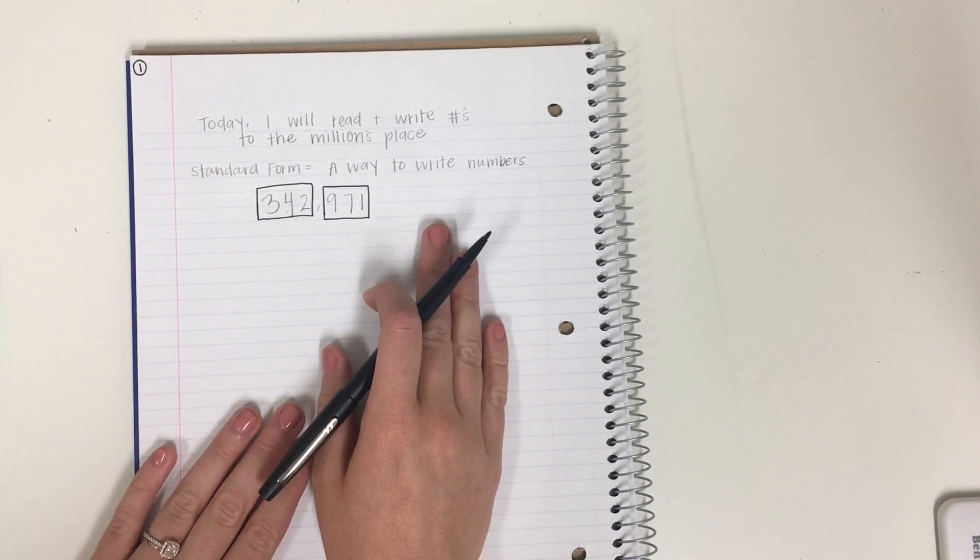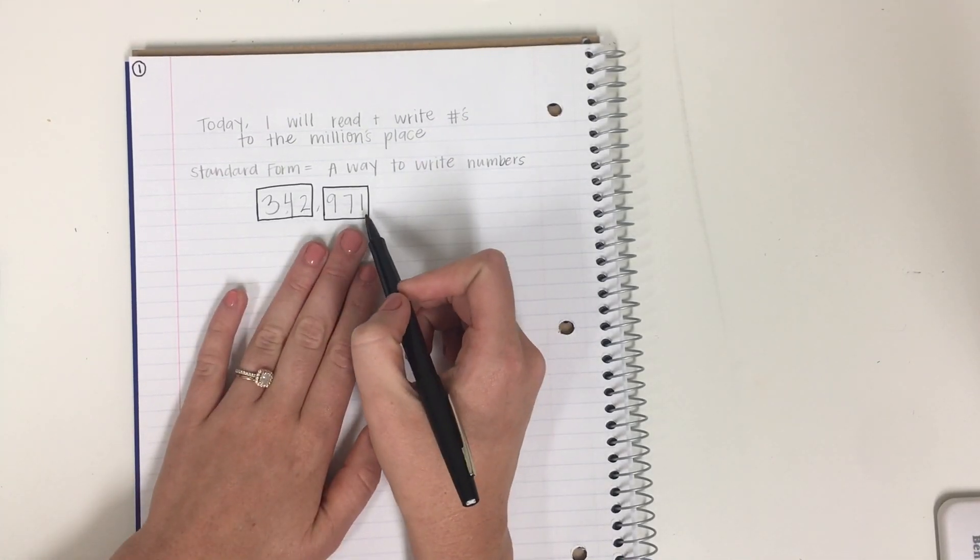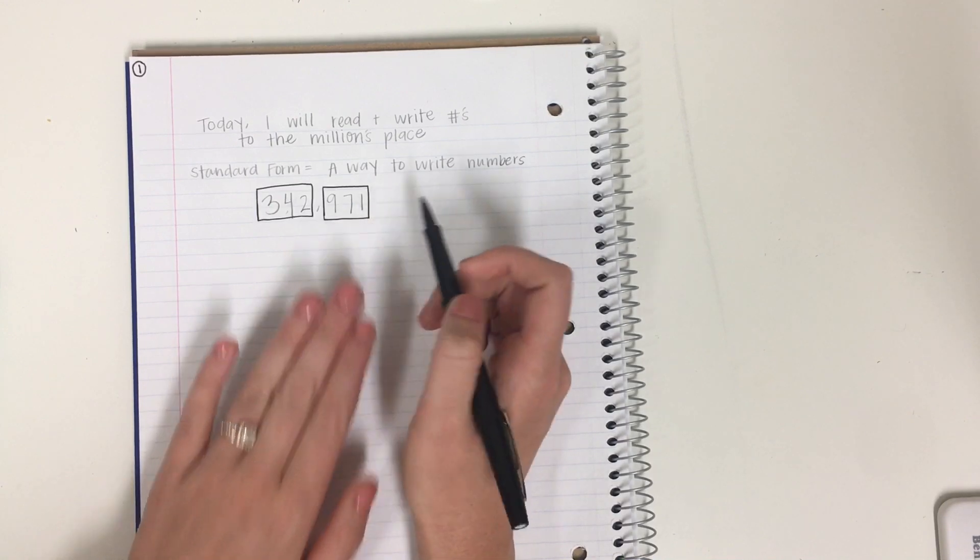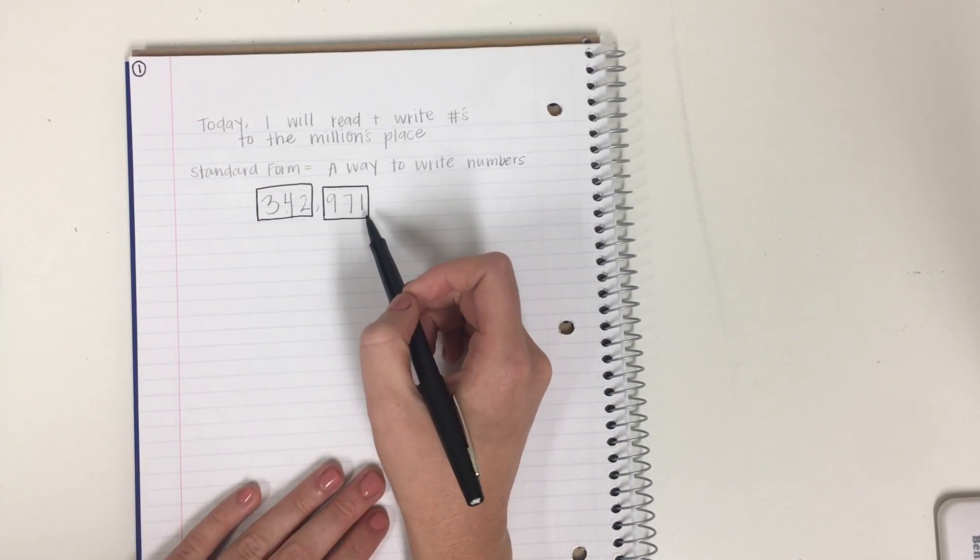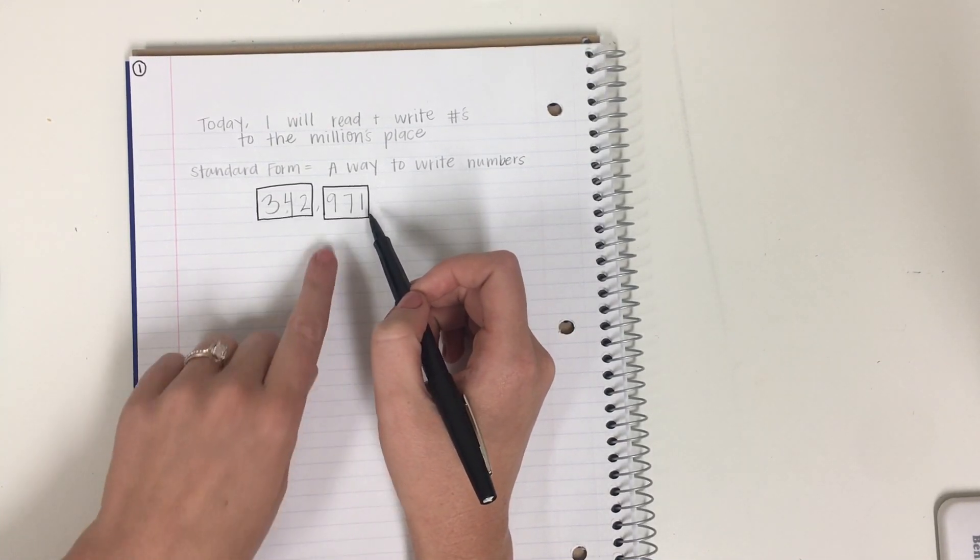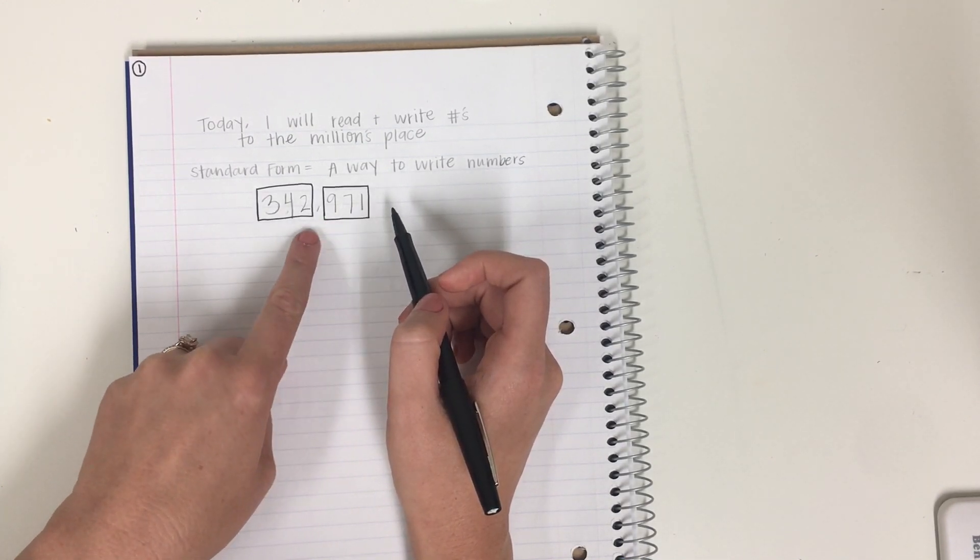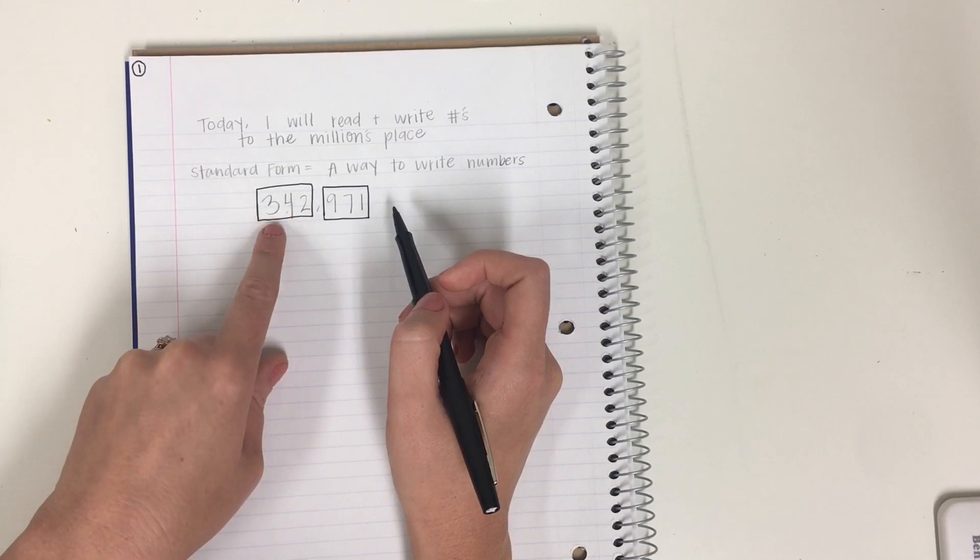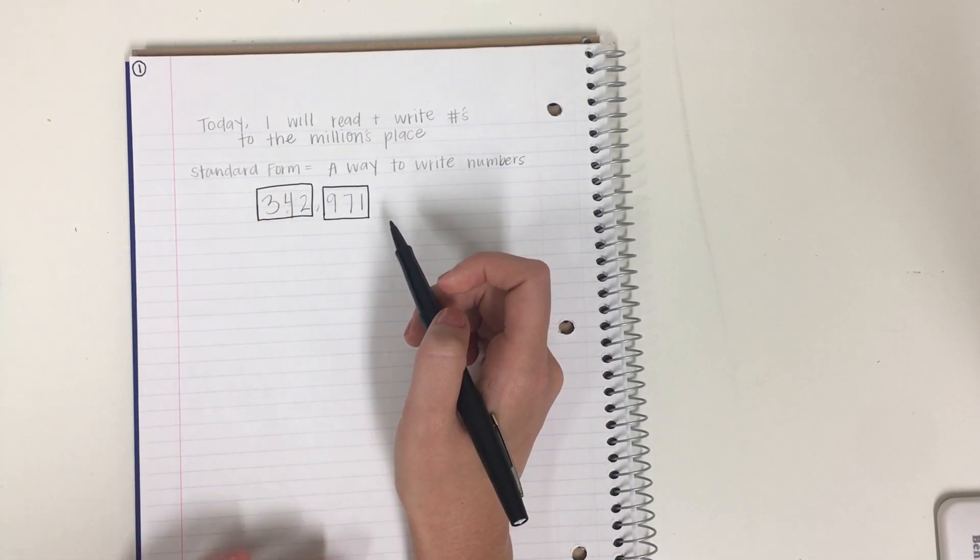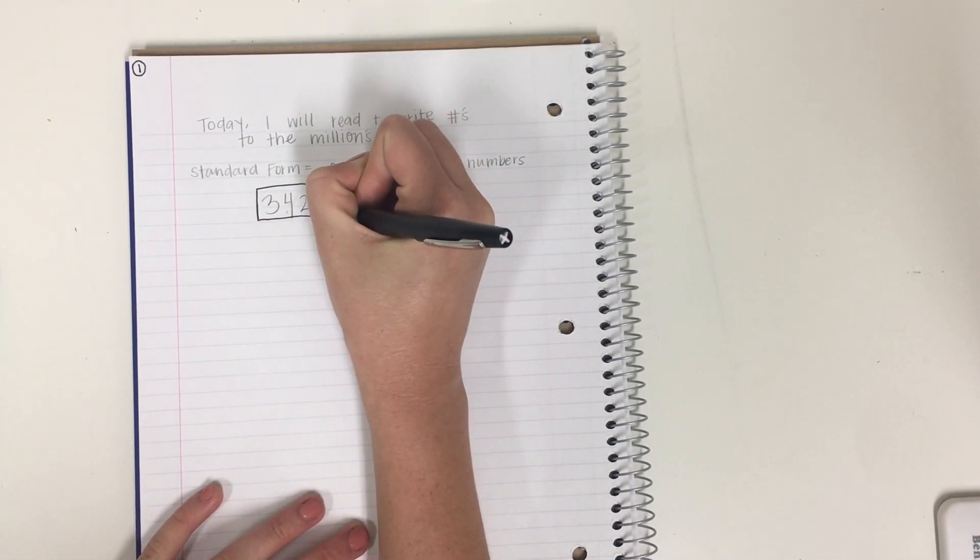What I want us to look at and remember is that each number or digit, we can refer to this as a digit, holds a special value, right? So we know this is in the hundreds place. So we have ones, tens, hundreds, thousands, ten thousands, hundred thousands. So I want you to look really closely at this comma.